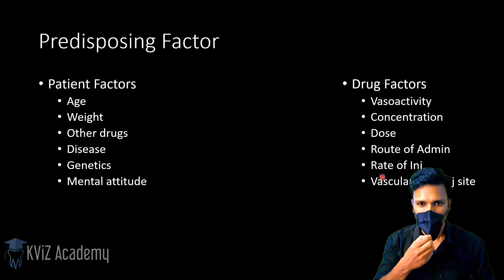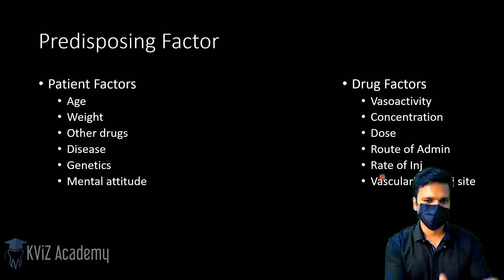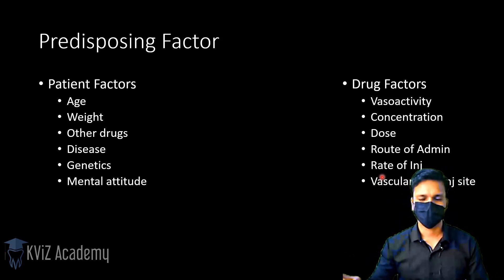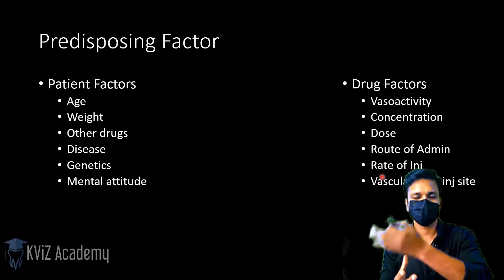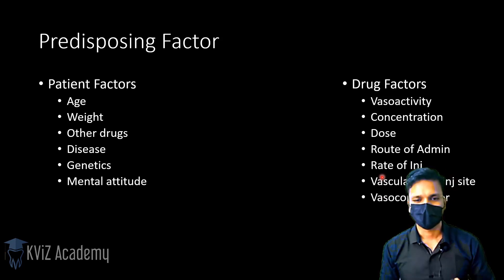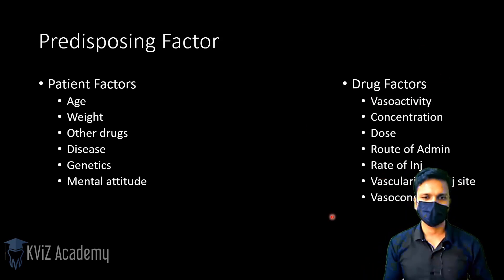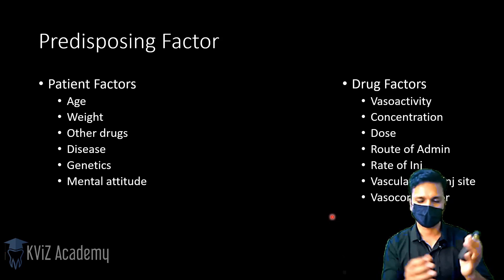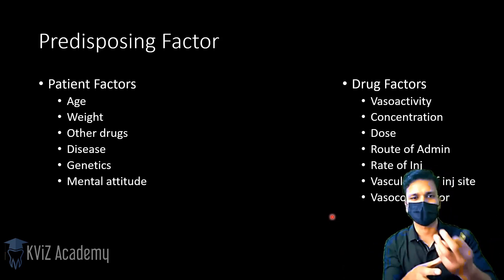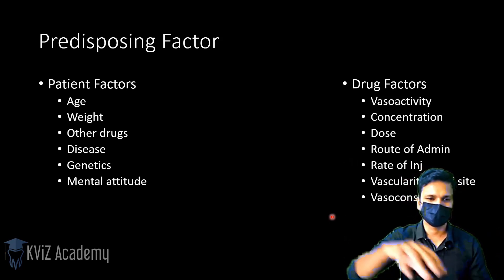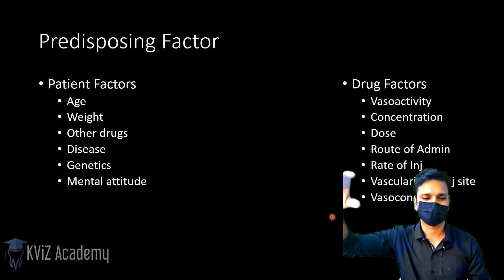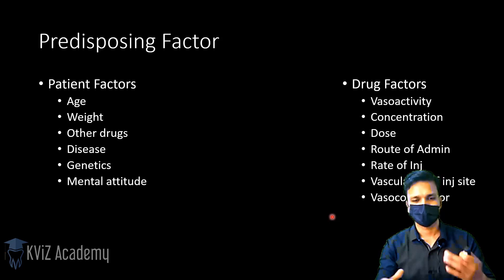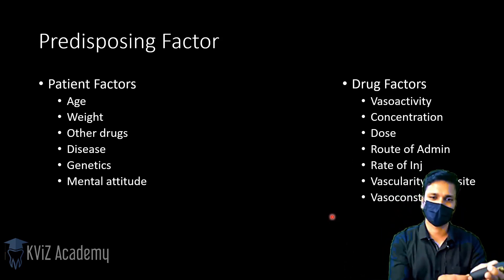Vascularity of the site is another drug factor. High blood supply leads to faster absorption of LA from the site, increasing the chances of overdose. Finally, the presence or absence of a vasoconstrictor is critical. LA molecules by themselves cause vasodilation and rapid absorption into the blood. Epinephrine as a vasoconstrictor causes vasoconstriction, slowing the rate at which LA molecules enter the blood and delaying the rise in blood concentration. Just by the presence of a vasoconstrictor, LA toxicity can be significantly prevented.